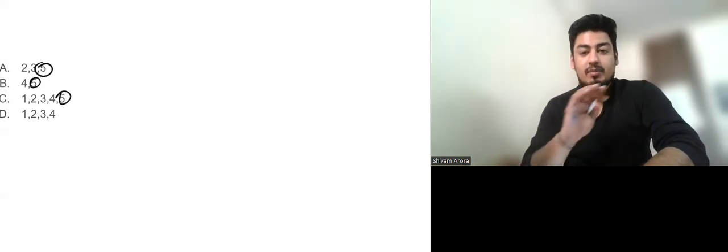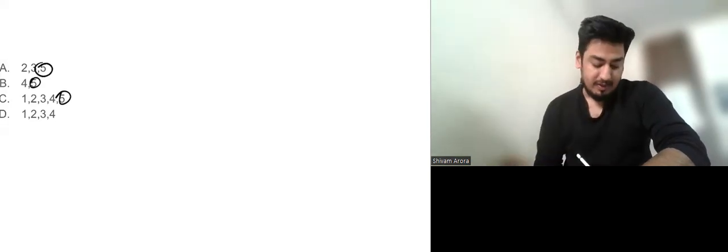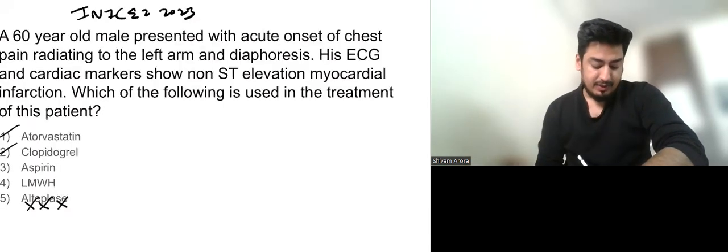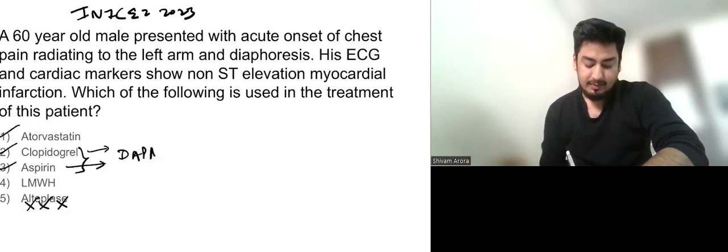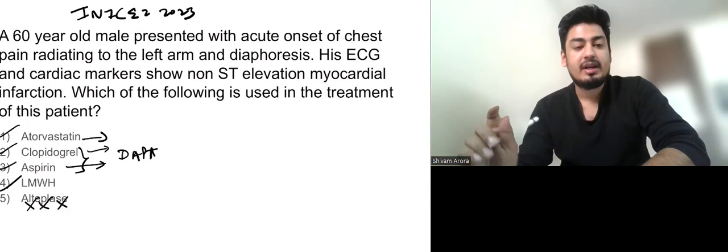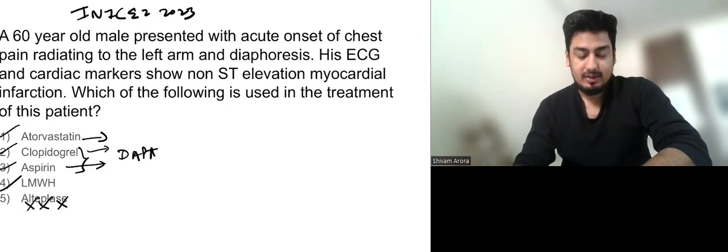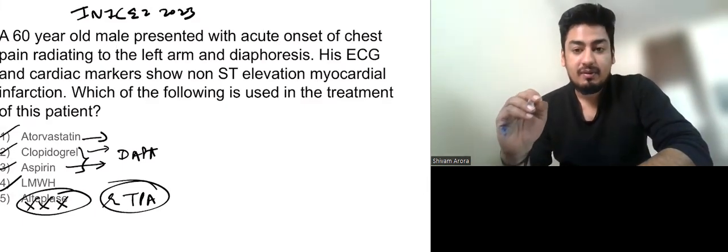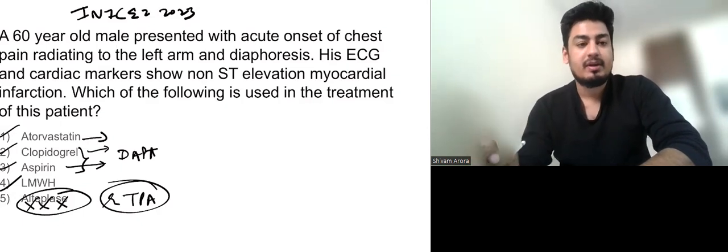Now we can come to the options. Option 5 is out. So if we don't know anything about this question, then the answer is D. You can easily get it. Other than that, atorvastatin, clopidogrel, aspirin. Aspirin and clopidogrel are dual antiplatelets. So atorvastatin and statin and heparin. So this is myocardial infarction we have to give heparin for 3 to 5 days. So 1, 2, 3, 4 are the correct options. Now alteplase is a recombinant tissue plasminogen activator. So you have to tell me in the comment section which is the most specific RTPA.